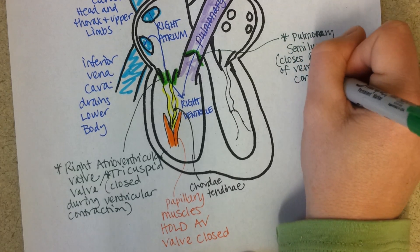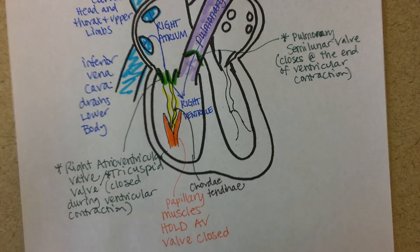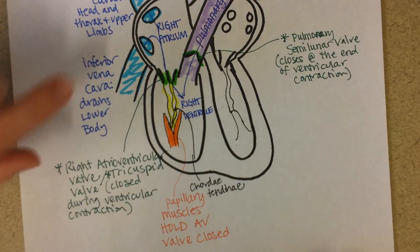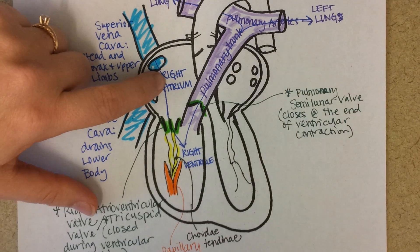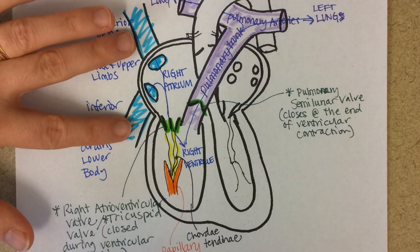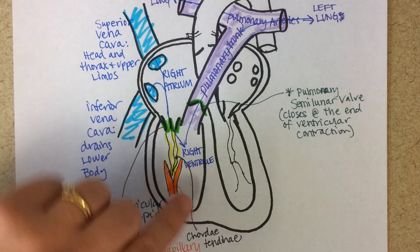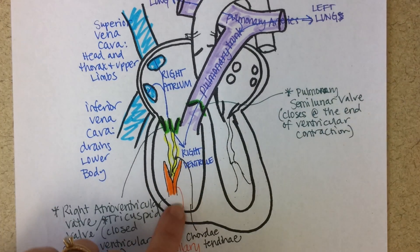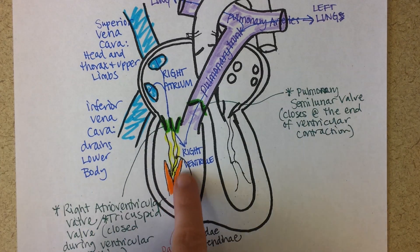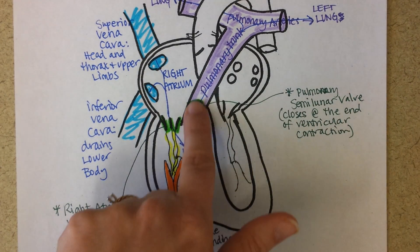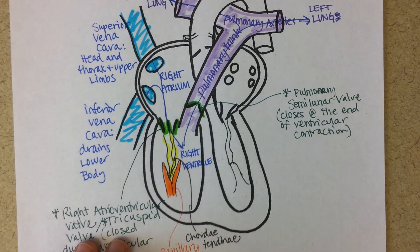The end of ventricular contraction is sometimes called systole. So to retrace: deoxygenated blood comes into the right atrium from the body, it's pumped down into the right ventricle. When the right ventricle contracts, the papillary muscles hold the AV valve closed and push blood up and out through the semilunar valve into the lungs where it gets oxygenated.